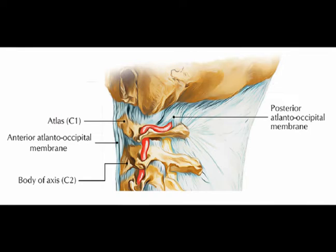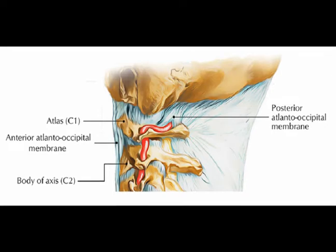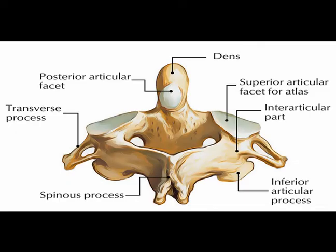It functions to bear the weight of the skull. The primary motions of the occipital atlantal joint are flexion and extension.